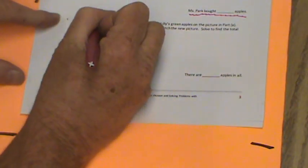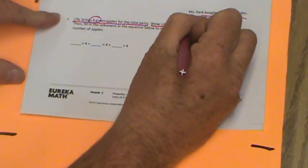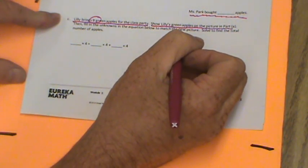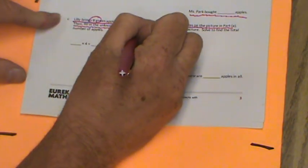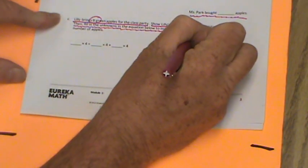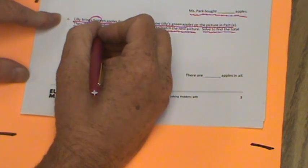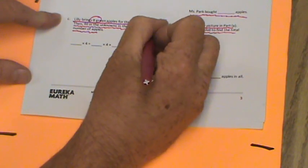Use the break apart and distribute strategy to find the total number of apples Ms. Park brought. So remember this something times four equals something times four plus something times four and Ms. Park bought how many apples? Let's continue on. Lily brings eight green apples for the class party.